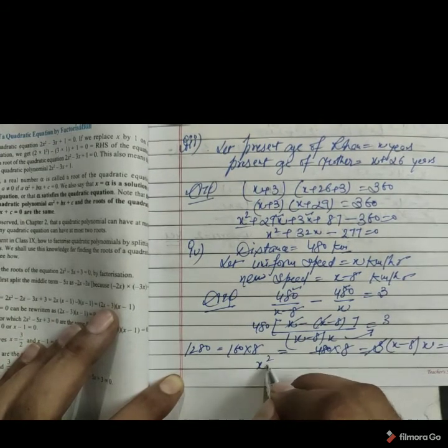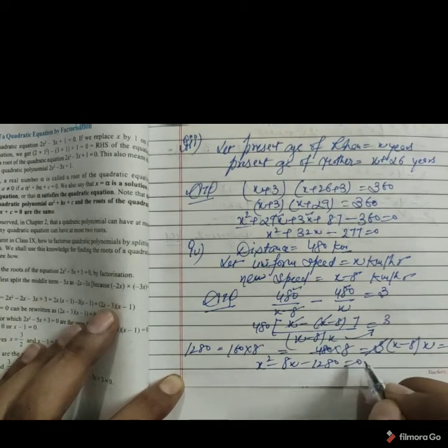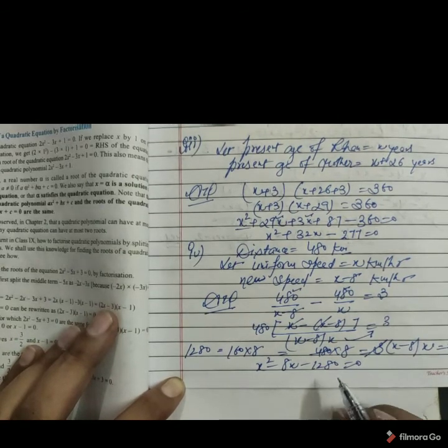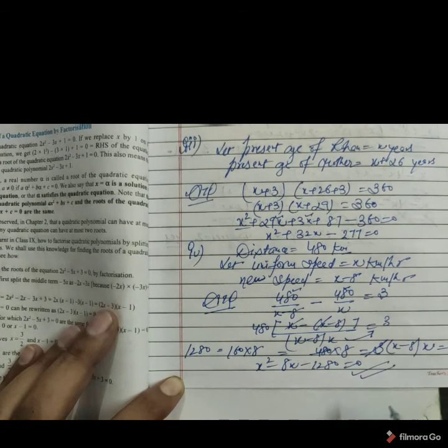If we collect the data we get x square minus 8x minus 1280 is equal to 0. So like this we can simplify the given equations and converting the information in quadratic equation. Thank you.